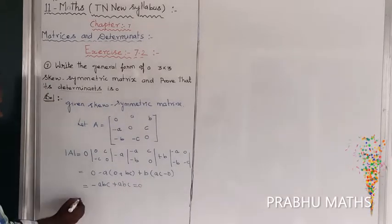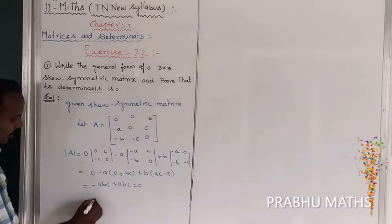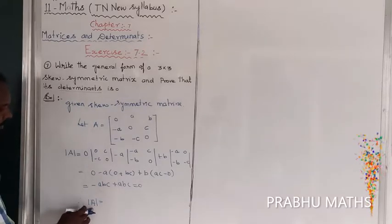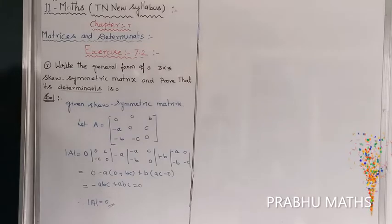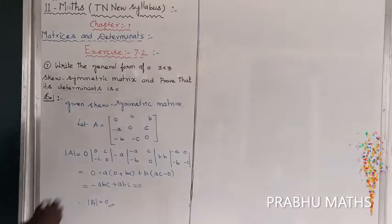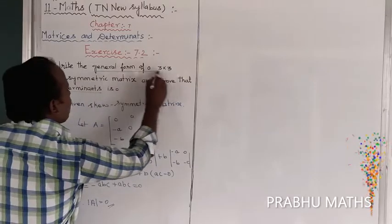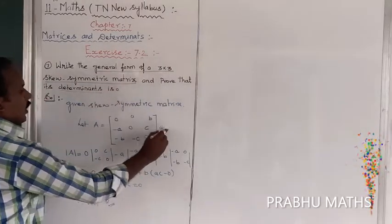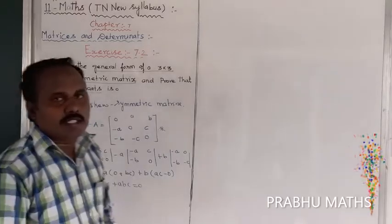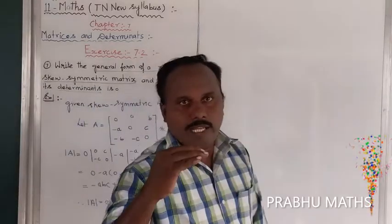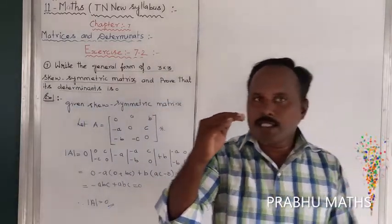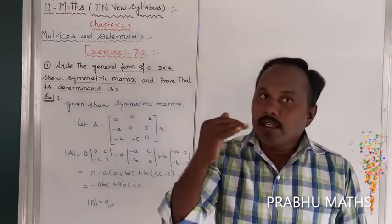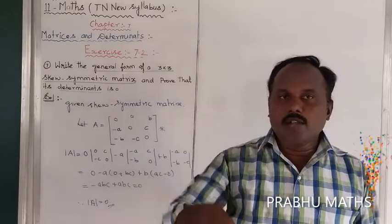Therefore the determinant of matrix A is equal to zero. Hence proved. The general form of the 3 by 3 skew symmetric matrix has determinant zero, with the positive and negative cofactor terms cancelling each other out.